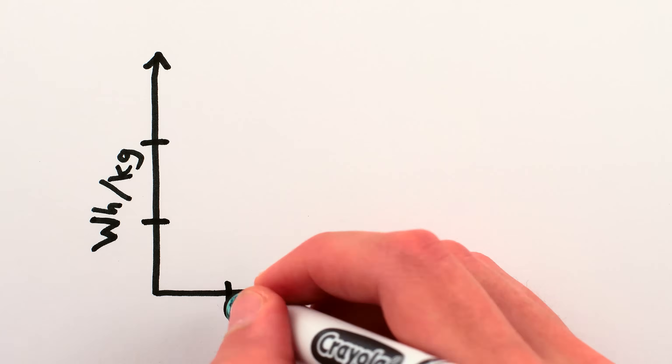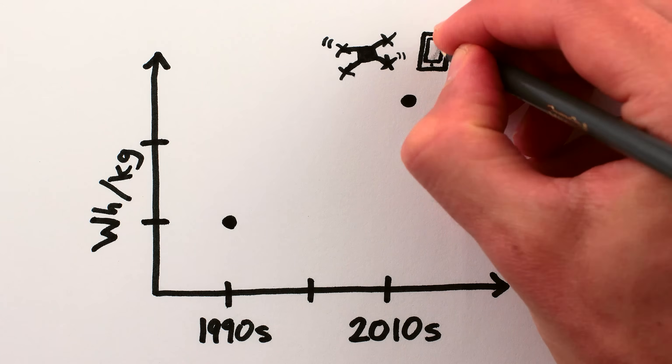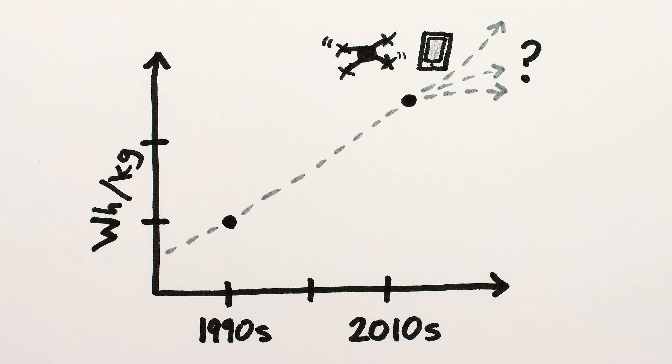Okay, so batteries have been getting better and better, and nowadays they can store over twice as much energy per kilogram as in the 1990s, which means that they're half the weight for the same energy stored, hence all the drones and smartphones. So what's the limit to this trend?